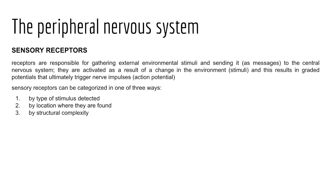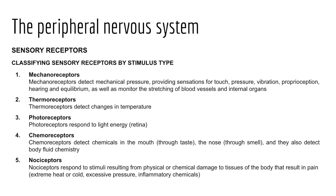Let's turn now to the study of sensory receptors. We studied these briefly in Chapter 5 when examining the integumentary system, learning that sensory receptors gather environmental stimuli from inside or outside the body and send collected information to the CNS for interpretation. Sensory receptors can be categorized in three ways: by the type of stimulus detected, by the location where receptors are found, or by their structural complexity.